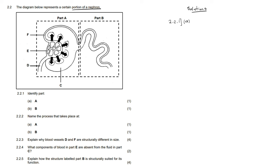So F is actually the efferent arteriole, E is the glomerulus, D is the afferent arteriole, and C is the Bowman's capsule. These arrows suggest that something is moving from the glomerulus. Part A is the Malpighian body.